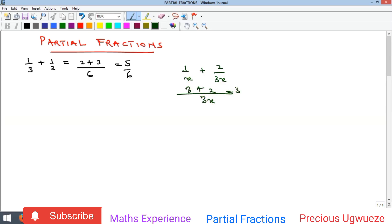The LCM here will be 3x. This will give us 3 plus 2, which is 5 over 3x. This is the process of joining two or more fractions to get a single fraction. The act of going the reverse direction—splitting a single fraction to give you two or more simpler fractions—is what we call partial fractions.